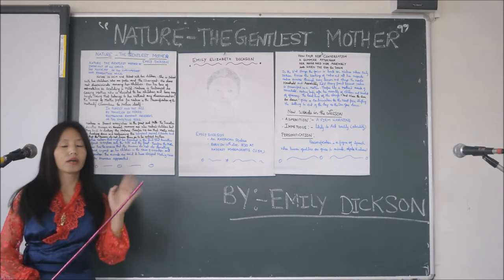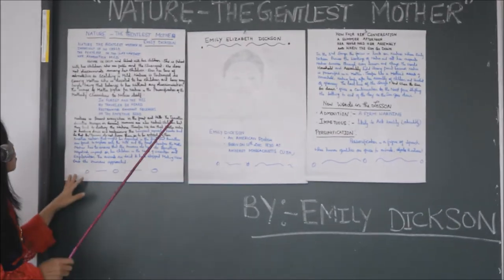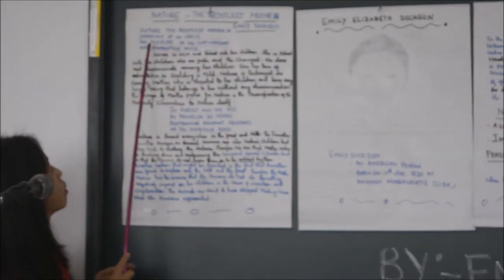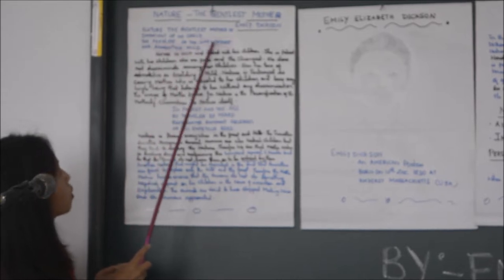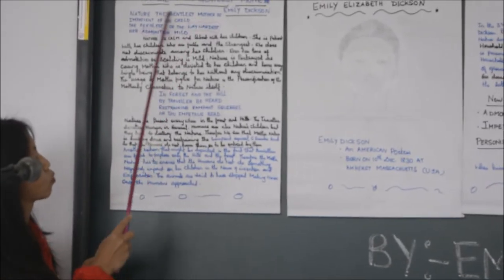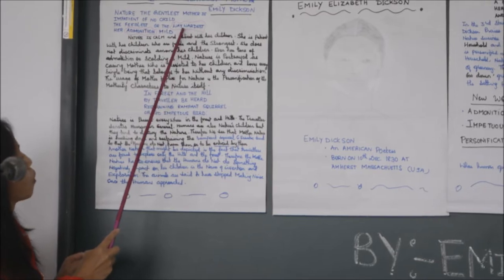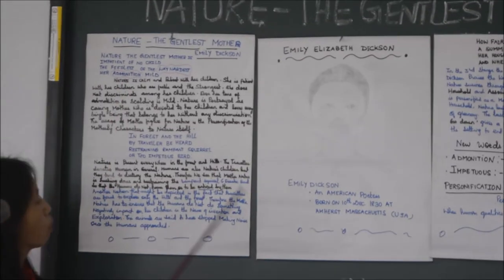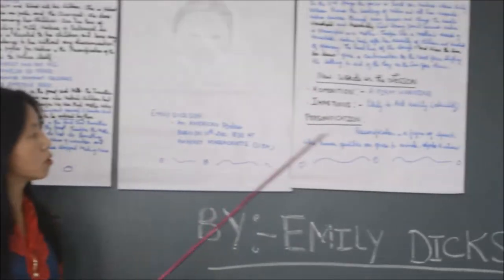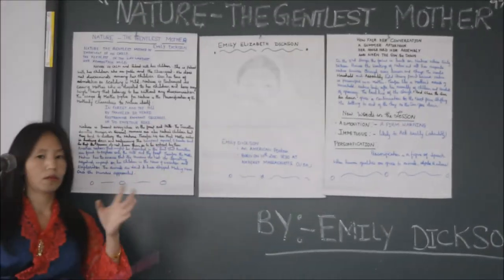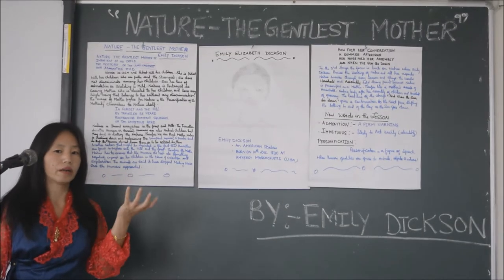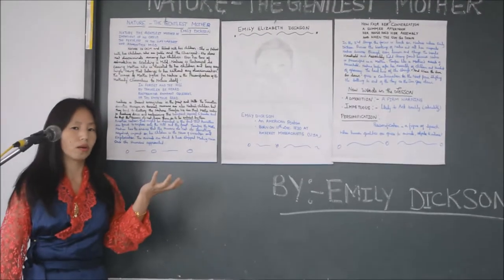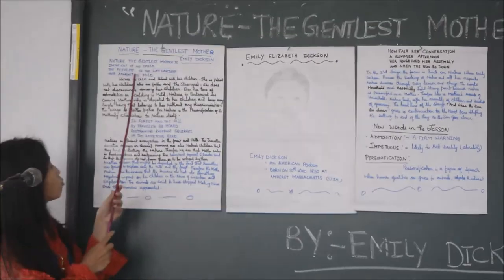The first stanza reads: 'Nature, the gentlest mother, is impatient of no child, the fablest or the waywardest, her admonition mild.' Two difficult words here: 'waywardest' means stubborn, having an independent kind of mind, doing things on one's own. 'Admonition' means a strong warning.